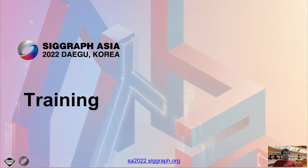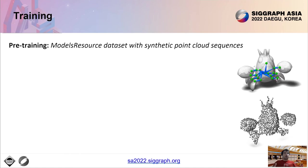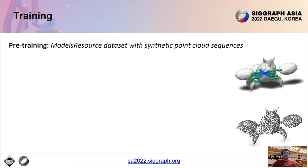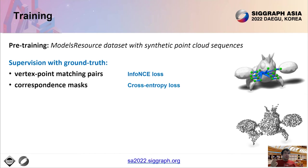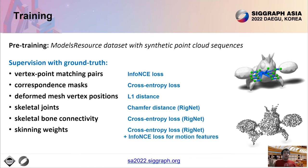We now describe training. First, we pre-train our whole pipeline on the ModelResource dataset. The dataset has ground-truth rigs for a diverse set of characters. However, it doesn't have any animations. To better utilize the dataset, we synthesize animation sequences for each mesh by applying random rotations to joints at keyframes, then interpolate the motion for the rest of the frames. We also simulate synthetic point cloud captures for each frame. As a result, we train our pipeline in a supervised manner using ground-truth vertex-point matching pairs, simulated correspondence masks, vertex positions of the training meshes under different skeletal deformations, the training skeletons with their joints, their bone connectivity, and finally, the ground-truth skinning weights. In blue, we show all combinations of losses used based on this supervisory signal. For more details, please see our paper.